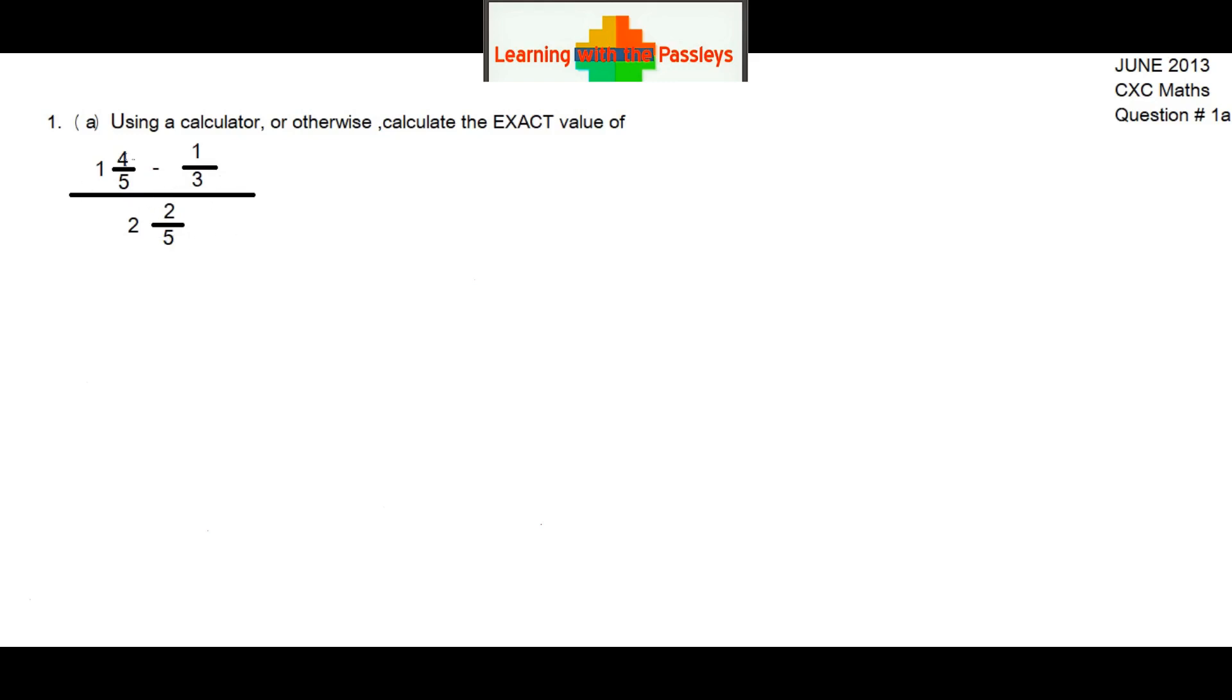Let's get straight into it. I'm going to rewrite the numerator, which is 1 and 4/5 minus 1/3. What I'm going to do is multiply the denominator by the whole number, then add the numerator, which is 4. So 5 times 1 is 5, plus 4 is 9, over 5. Now we have an improper fraction, 9/5.